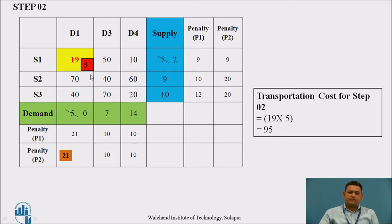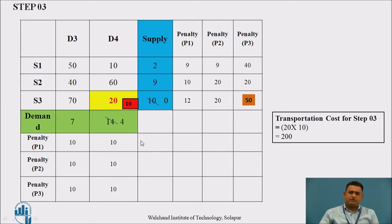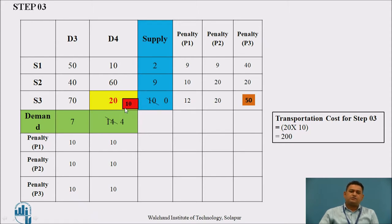For step 3, with D1 also eliminated, we find penalty 3. The highest penalty is 50, lying in source S3. In source S3, the costs are 17 and 20 — the smallest is 20, which lies at D4. D4 has a demand of 14 and source S3 has a remaining availability of 10. Source S3 is fully supplied. The transportation cost for step 3 is 20 into 10, which is 200.